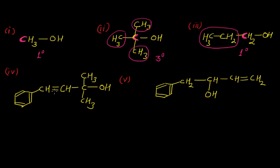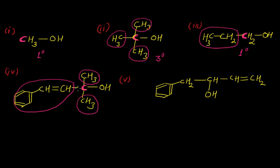Example 4 is a slightly more complicated structure. We focus on the carbon on which the OH group is present. All three hydrogen atoms get replaced: this is a methyl group, this is also a methyl group, and a bigger group replaces the third hydrogen atom. So this compound is a tertiary alcohol.